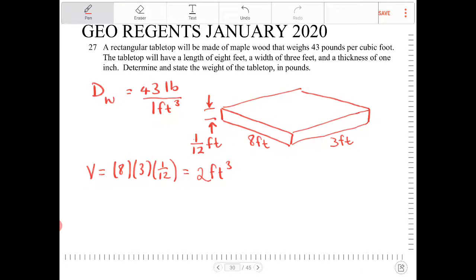Now I need to figure out what is the weight of the entire tabletop. So what I'm going to do is I'm going to take this 2 cubic feet and I'm going to multiply this by 43 pounds per 1 foot cubed here. How do I know that I am not dividing?